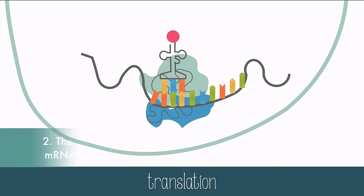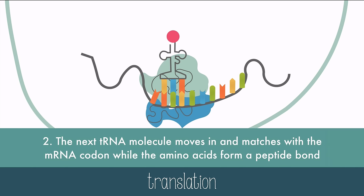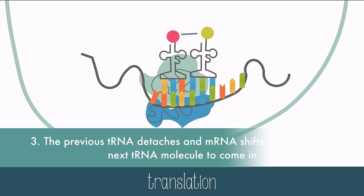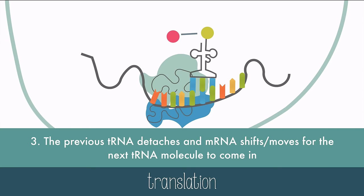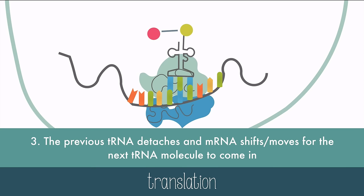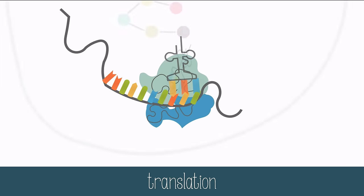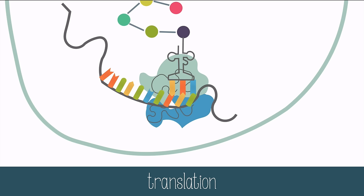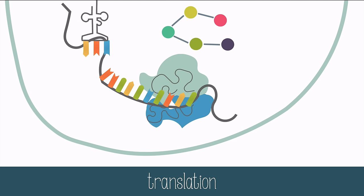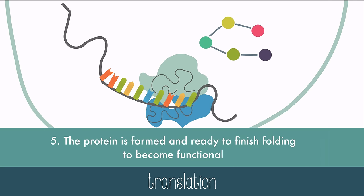The next tRNA molecule moves in and matches up with the mRNA codon. The amino acids form a peptide bond and link together. Then the first tRNA can detach and the mRNA shifts through like ticker tape, and the next tRNA molecule can come in. The protein grows until a stop codon is reached. Once the stop codon is read, the protein is formed and ready to finish folding to become functional.